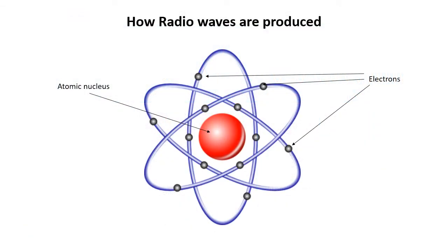Radio waves are radiated by electrons when they are accelerated, which means changing their speed or direction. Electrons are very small particles that have a negative charge of electricity and they normally travel around the nucleus of an atom. They are far too small to be seen, but their presence can be felt everywhere. An electric current occurs when electrons move from atom to atom in an electric circuit — this happens each time you switch on an electric light, for example.